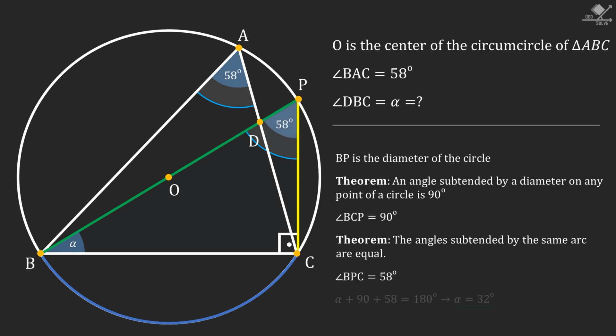And from the shaded triangle, alpha can be calculated as 32 degrees. And that is our answer. I'll see you next time. Thank you.